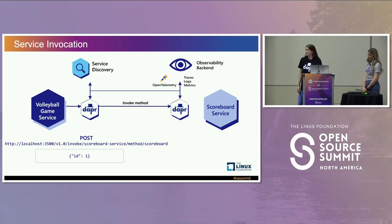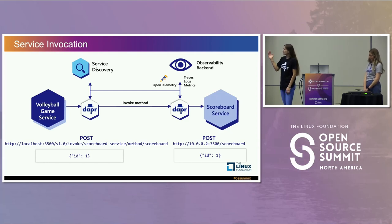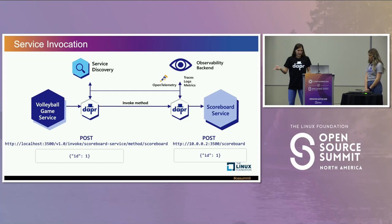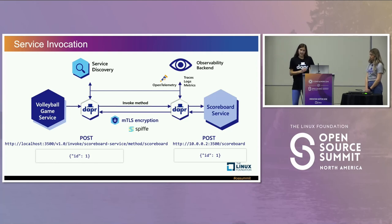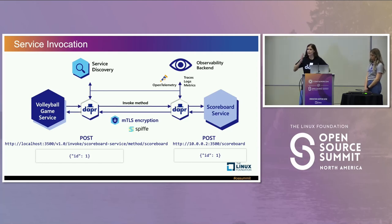We finally hit the actual app we're trying to communicate with — the scoreboard service, hitting the scoreboard endpoint with that ID. We have our game information and send it back to the DAPR sidecar. The DAPR sidecar communicates to the other DAPR sidecar through mTLS encryption using SPIFFE. And from there we're able to get our game information.